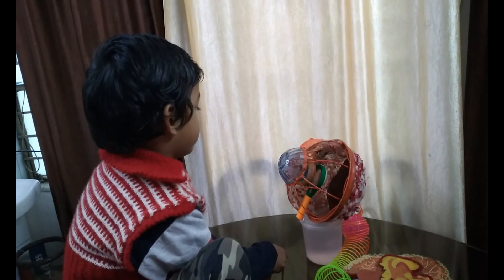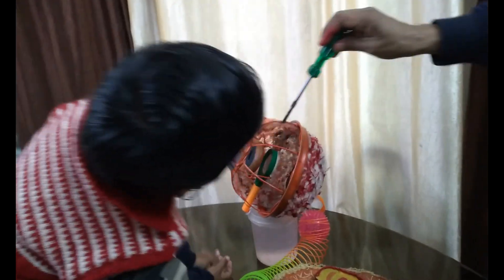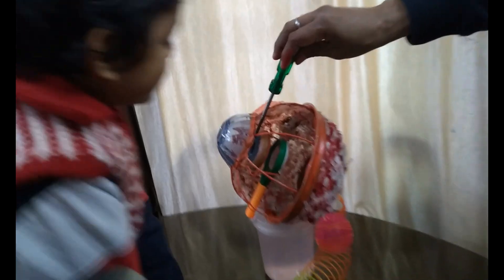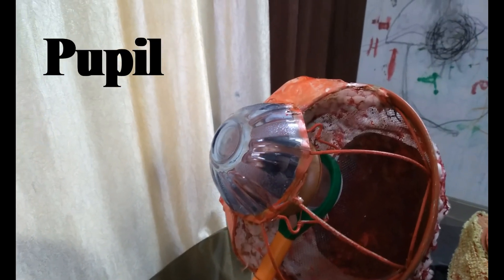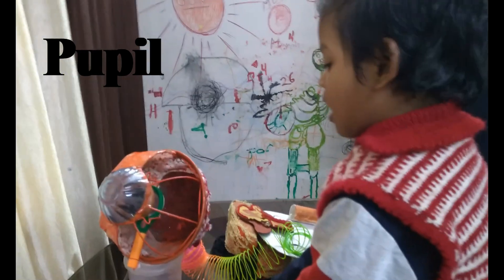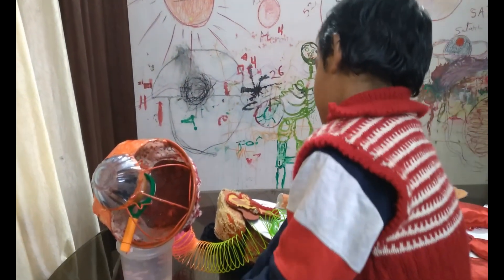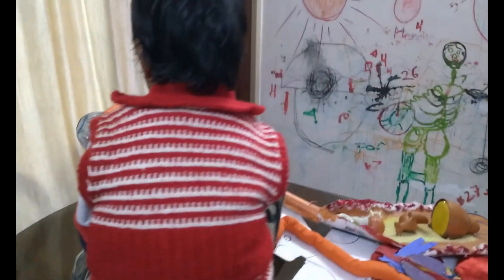Now tell me — what is that black thing? Are you looking at the black thing? Yeah, this black thing — what is this? Pupil. It allows the light to come in the eye. Yes, you are right. Very good. Fantastic.